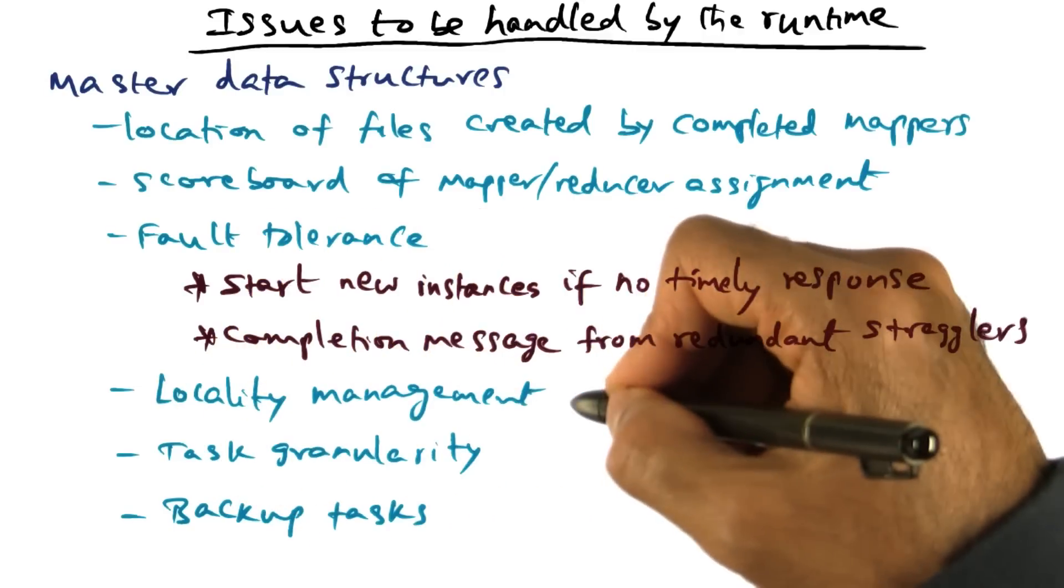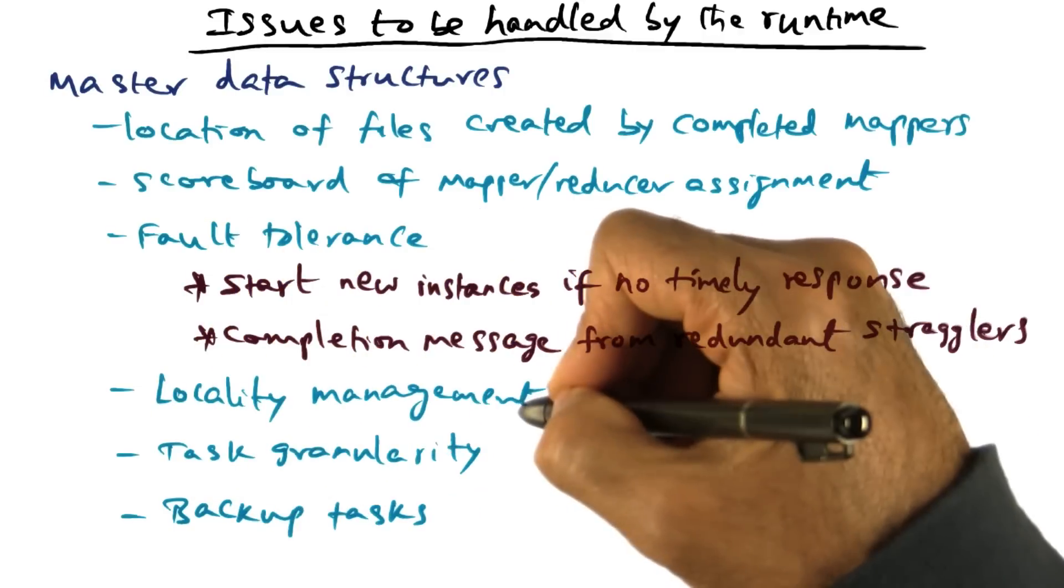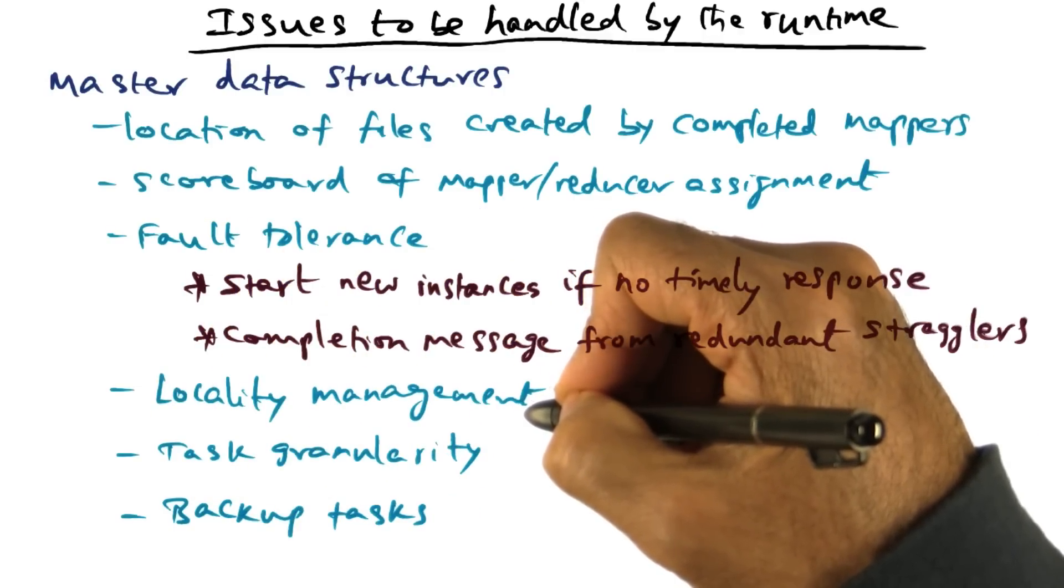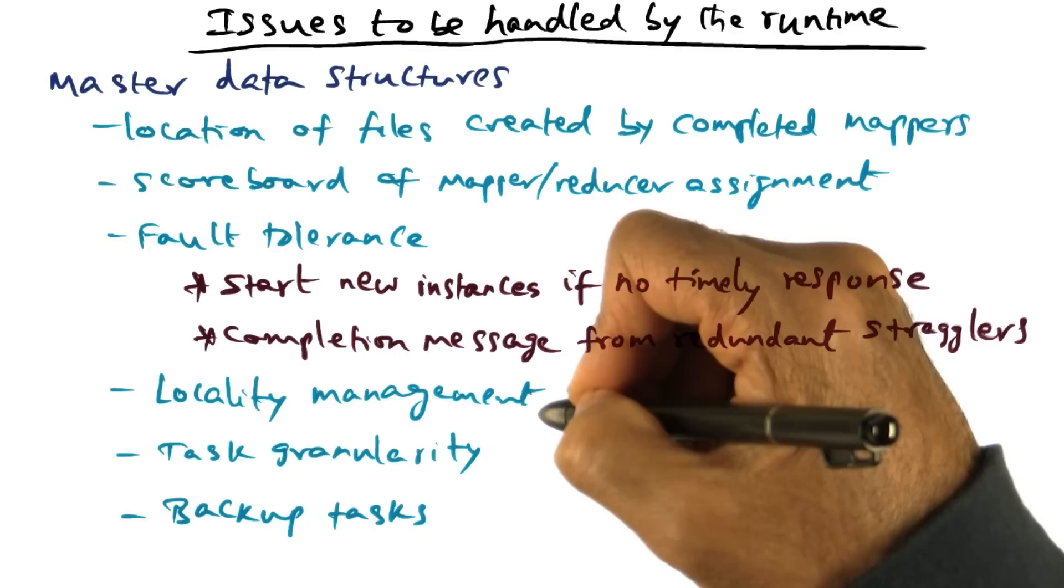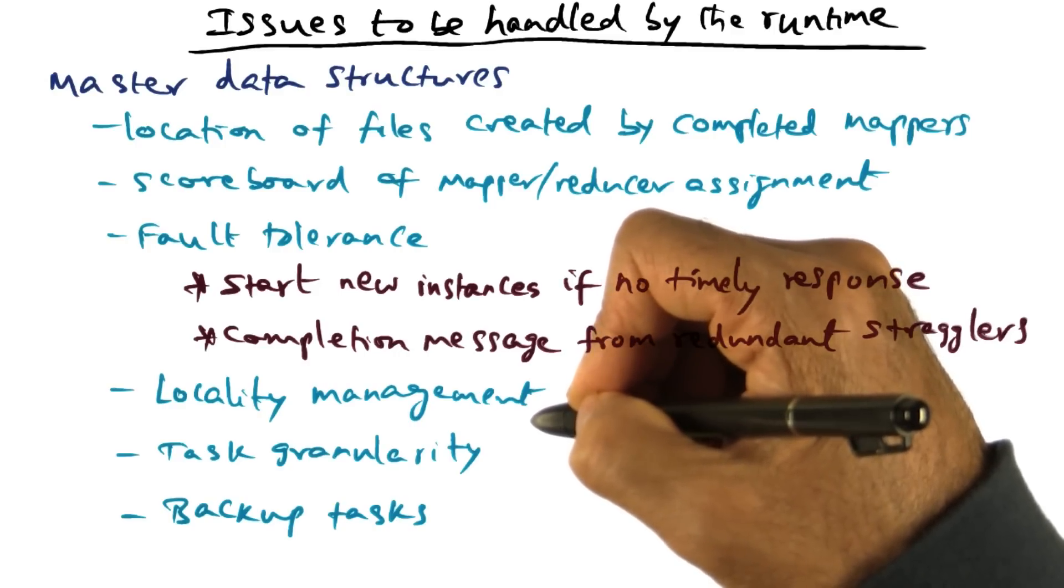The other thing that the programming environment has to worry about is locality management. And this is accomplished using the Google file system that provides a way by which efficiently data can be migrated from the mappers to the reducers.